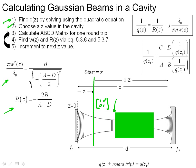And so we've chosen a Z value. We've calculated the ABCD matrix. Once we have the ABCD matrix, we go ahead and calculate W of Z and R of Z using these two equations right here, which are given in equation 5.3.6 and 5.3.7 in your book.